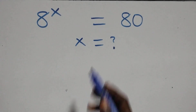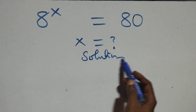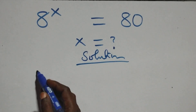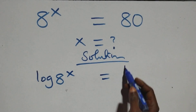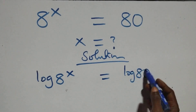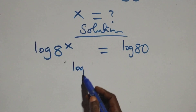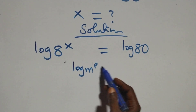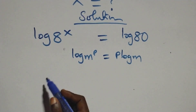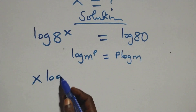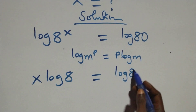Hello, welcome. We solve this exponential equation. Taking the log on both sides, we have log A raised to power x equals log 80. We apply the power law of logarithms: log M raised to power P is the same as P log M. So this becomes x log 8 equals log 80.